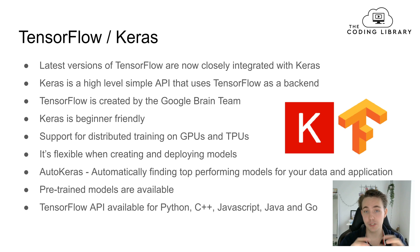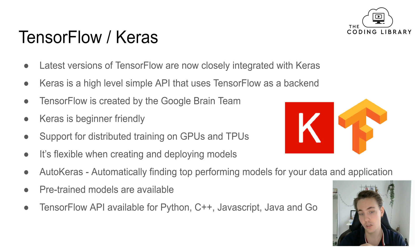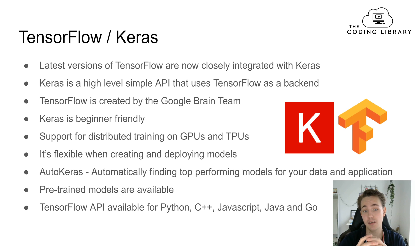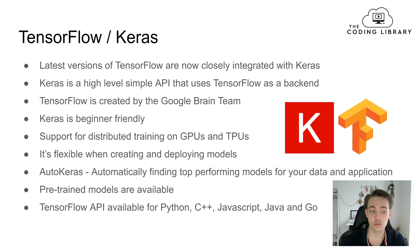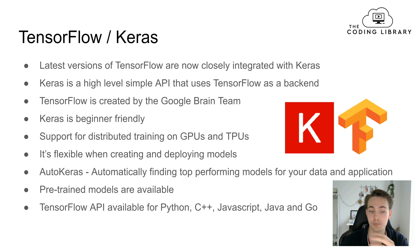Distributed training support is very important nowadays when dealing with very large datasets and long training processes. GPUs are graphical processing units and TPUs are tensor processing units, which are both great for matrix operations and multiplications — exactly what neural networks, which are essentially just tensors and matrices, require. Keras and TensorFlow are also very flexible when creating and deploying models, and we also get a feature called AutoKeras, which automatically finds the top-performing models for your data and application.